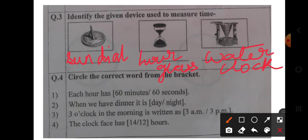Now question number four, circle the correct word from the bracket. Each hour has 60 minutes. When we have dinner, it is night. Three o'clock in the morning is written as 3 a.m. The clock face has 12 hours.